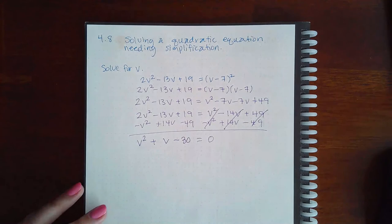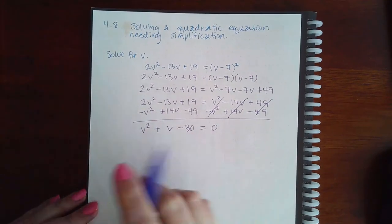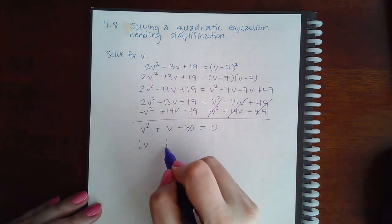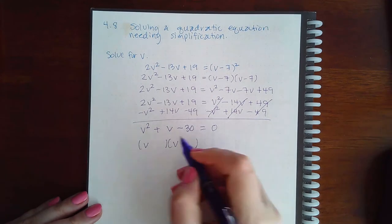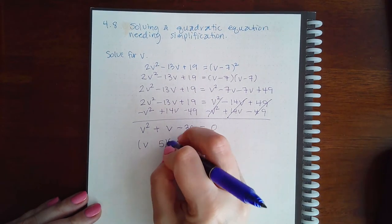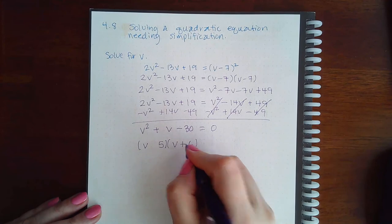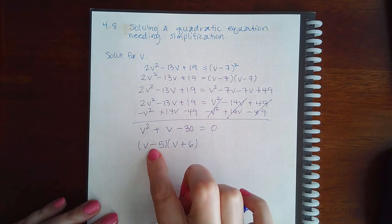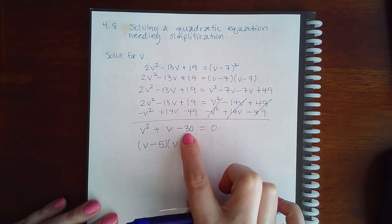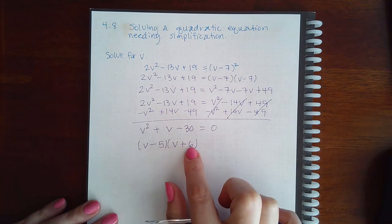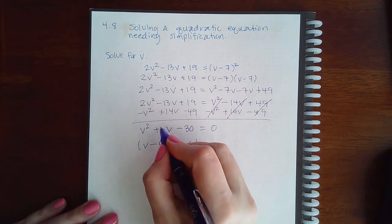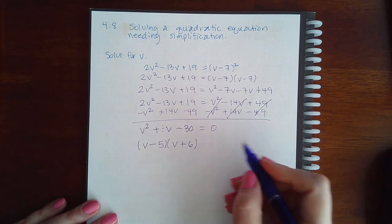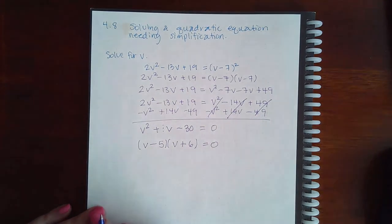Then I have to find the factors of 30 that will subtract to give me 1, and that should be 5 and 6. The bigger one will have to be positive. So -5 times positive 6 is -30, and -5 + 6 is positive 1—that little imaginary 1 here.